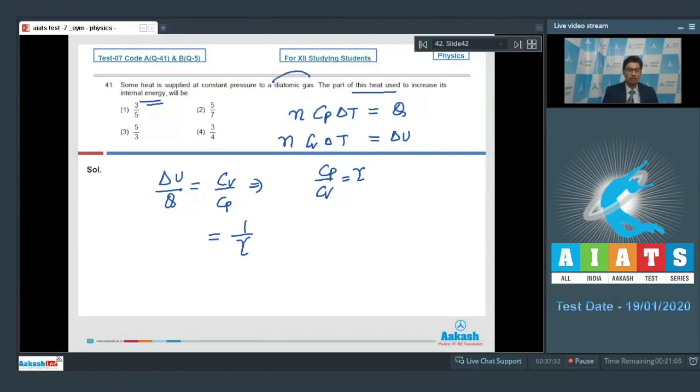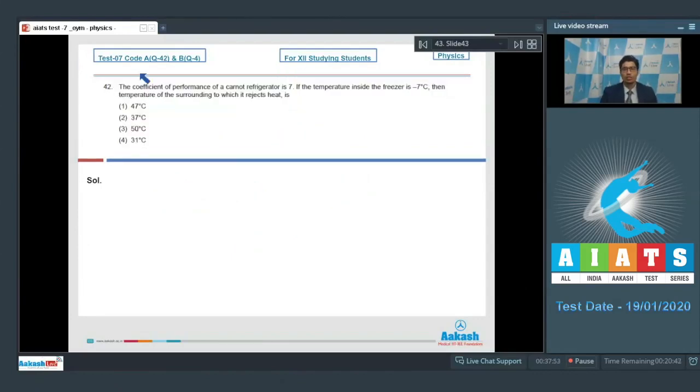The gas is given to be equal to diatomic, which means that the 1 by gamma will have a value of 5 by 7, and hence therefore option number 2 is the correct answer. Now, let us proceed to question number 42.